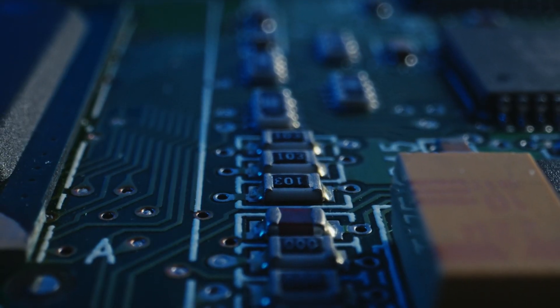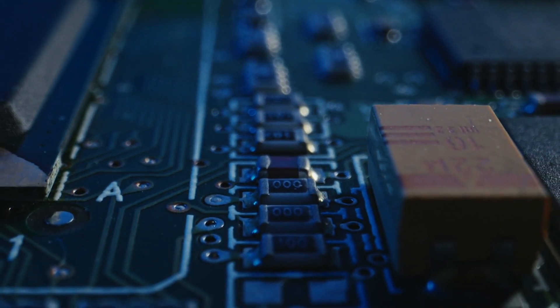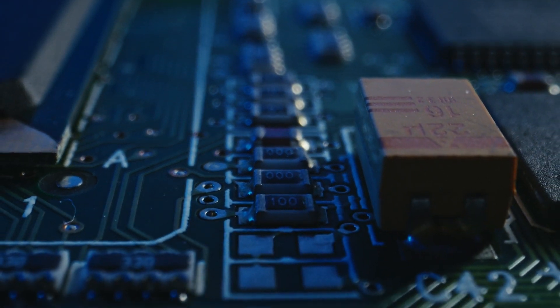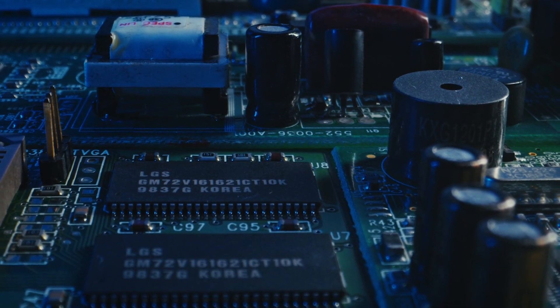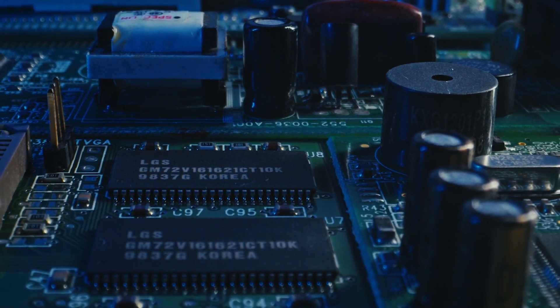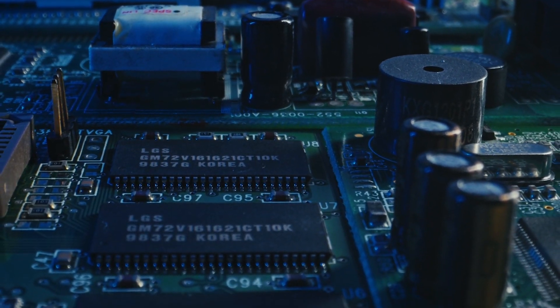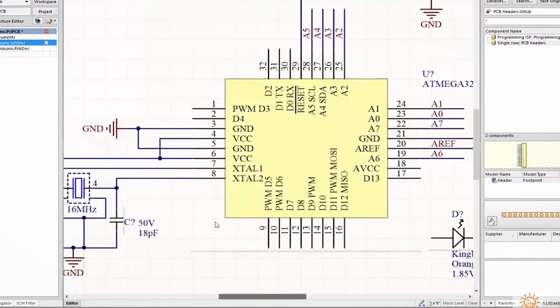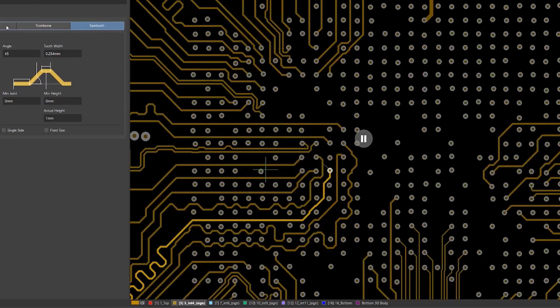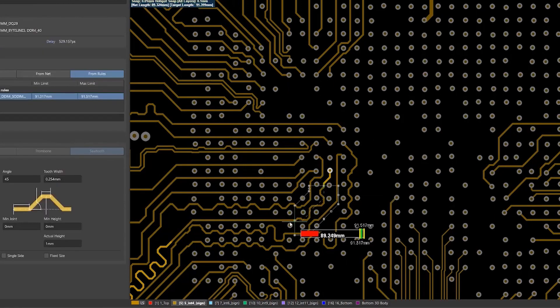If you ever worked on PCB design for computer vision applications, you know that transmitting video signals is a very delicate task with many high-speed signals that you have to consider in terms of electromagnetic noise and crosstalk. Altium helps you to easily manage and route high-speed signals with length tuning to ensure that you receive clear image quality on the other end.